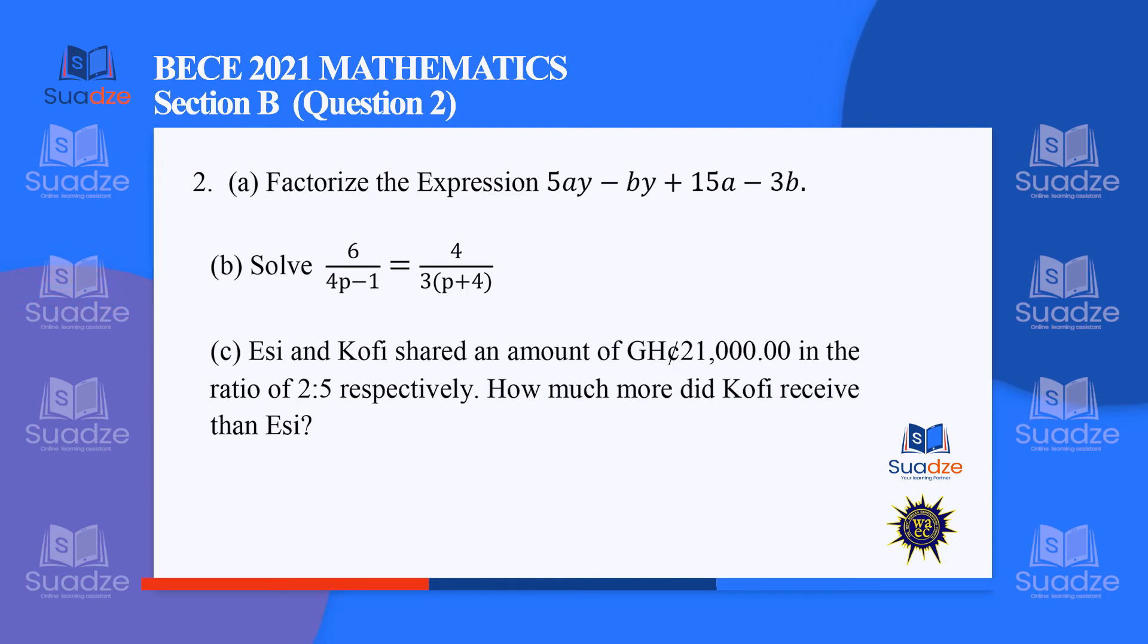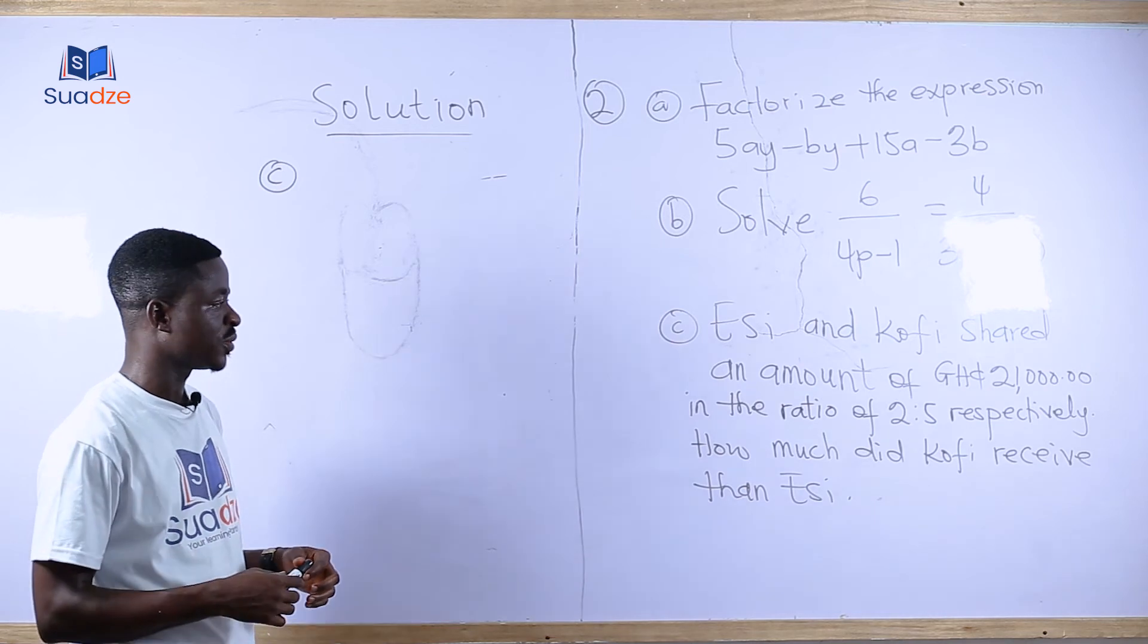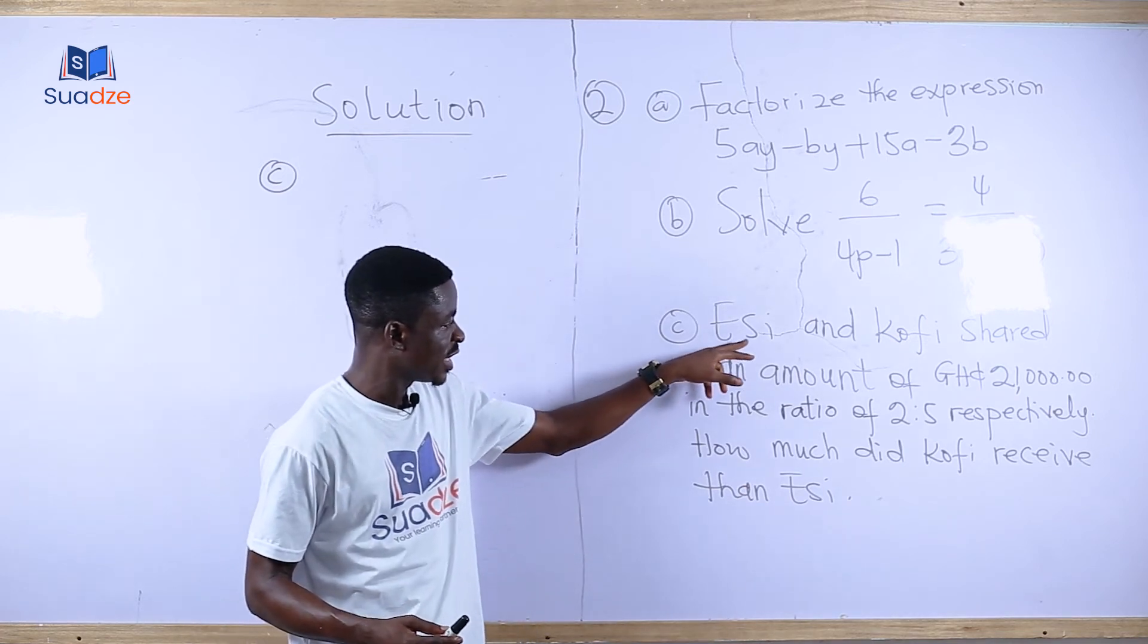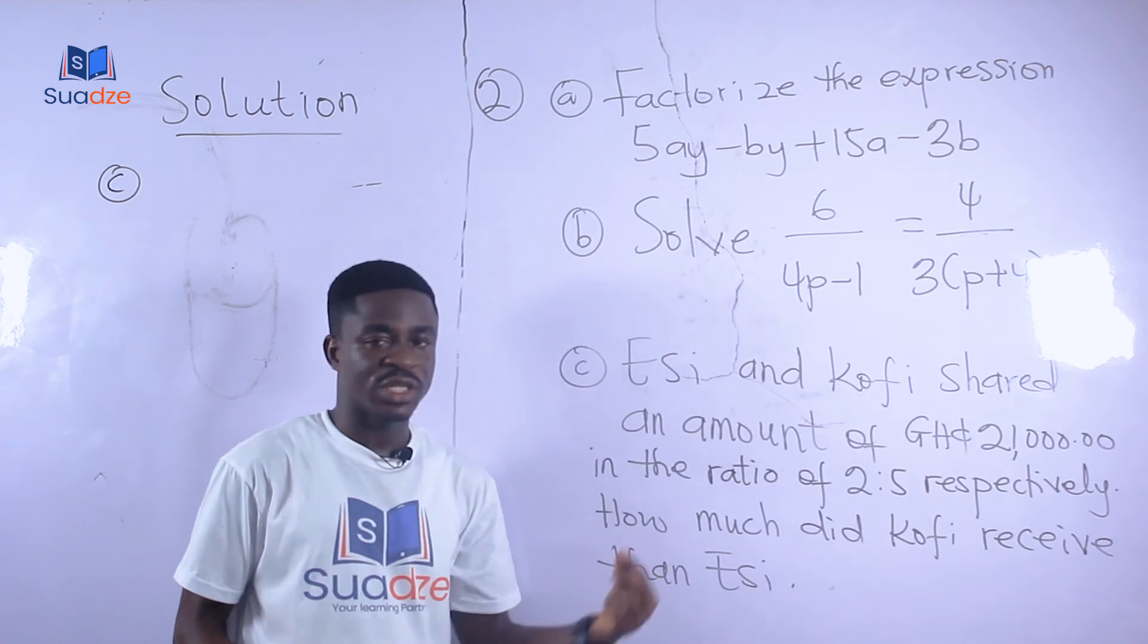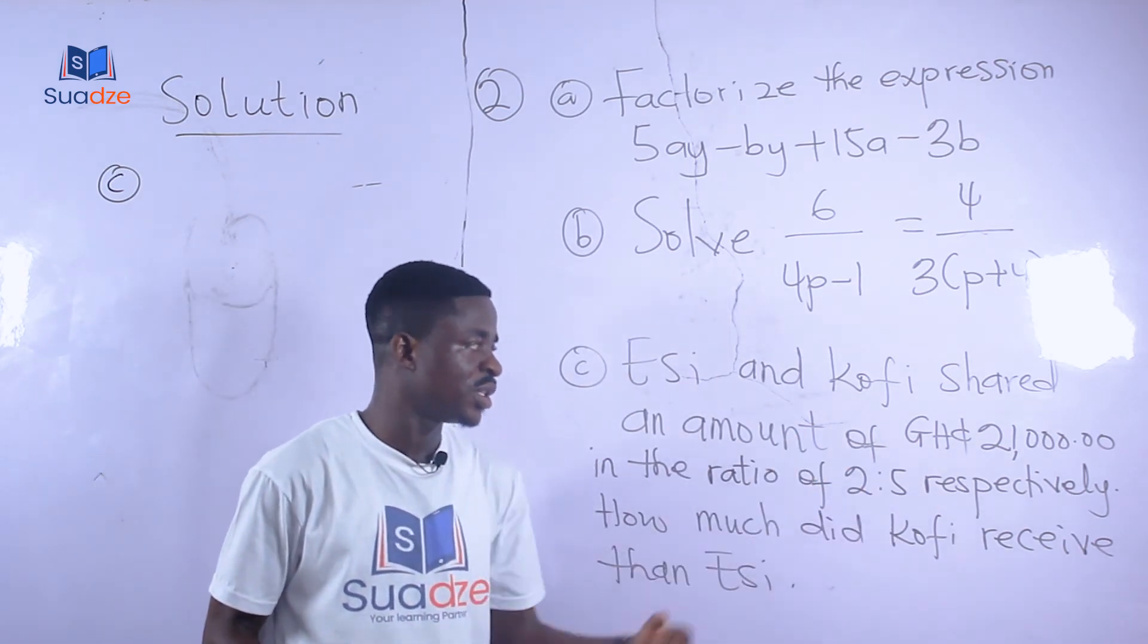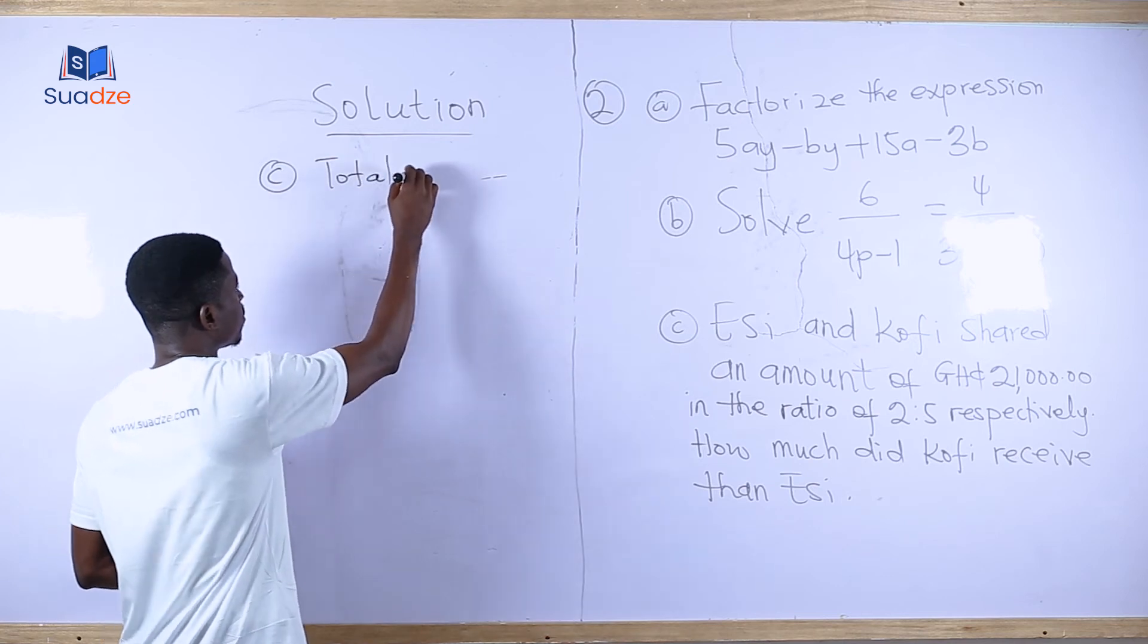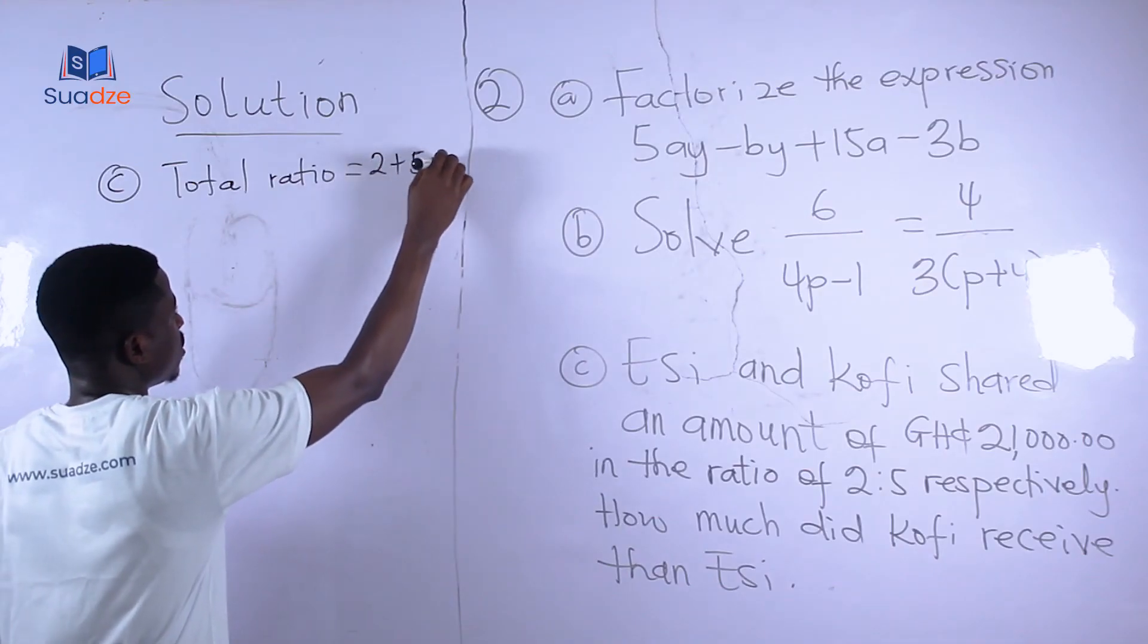The question says that AC and Kofi shared an amount of 21,000 Ghana cedis in the ratio of 2 to 5 respectively. How much did Kofi receive than AC? This is a question that deals with ratio and proportion. First of all, you need to identify which ratio goes to who. Realize that they said AC and Kofi. AC's name came first, so the 2 is given to AC and the 5 is given to Kofi. Before we begin, we find the total ratio. The total ratio equals 2 + 5, which gives us 7.